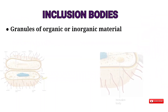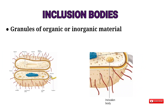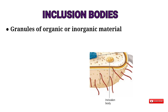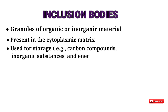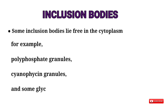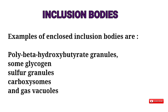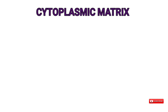Coming to inclusion bodies — inclusion bodies are granules of organic or inorganic material that are often clearly visible in a light microscope and are present in the cytoplasmic matrix. These bodies are usually used for storage — for example, carbon compounds, inorganic substances, and energy. Some inclusion bodies lie free in the cytoplasm, such as polyphosphate granules, cyanophysin granules, and some glycogen granules. Examples of enclosed inclusion bodies include poly-beta-hydroxybutyrate granules, some glycogen and sulfur granules, carboxysomes, and gas vacuoles.